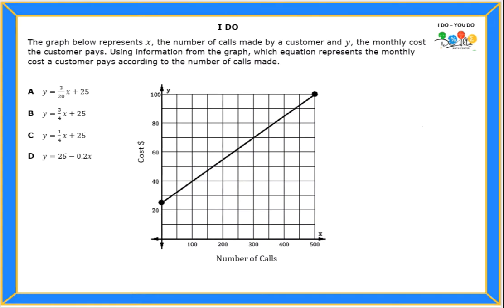Hello students, let's read the problem. The graph below represents x, the number of calls made by a customer, and y, the monthly cost the customer pays. Using information from the graph, which equation represents the monthly cost a customer pays according to the number of calls made?